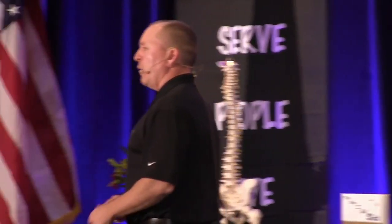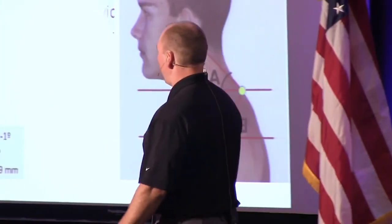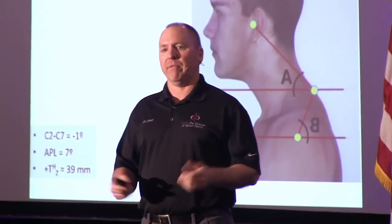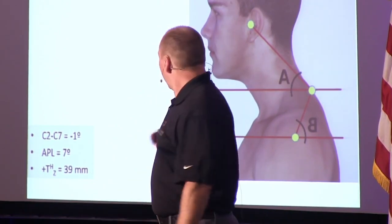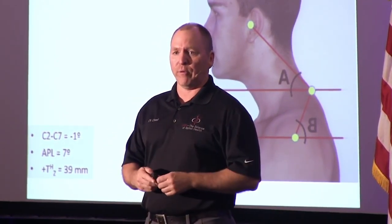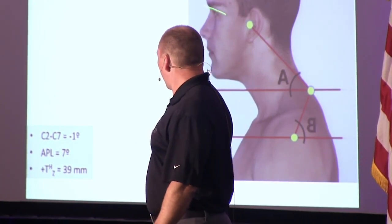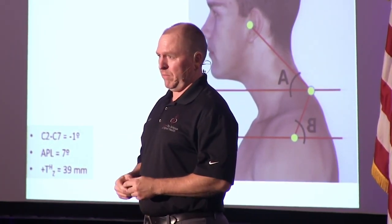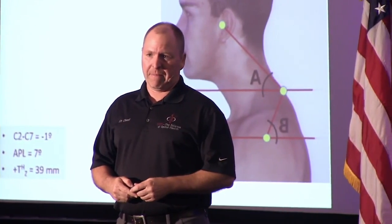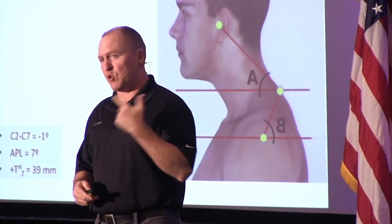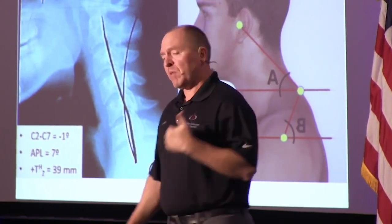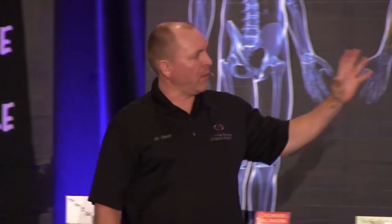A person with headaches — 28-year-old male, been to a lot of different providers, only temporary relief. He has anterior head translation and rounding of the shoulders. It's a pretty good idea to take the x-ray because you don't know what it looks like. He's got a reversal of his mid and lower cervical curve. So: forward head posture — bad problem; kyphotic neck curve — bad problem. In his case, it's causing asthma and headaches.